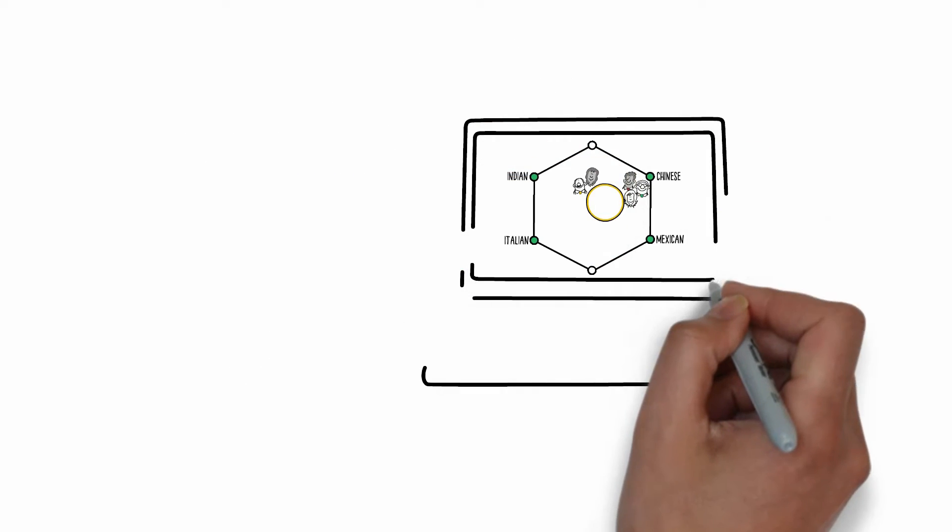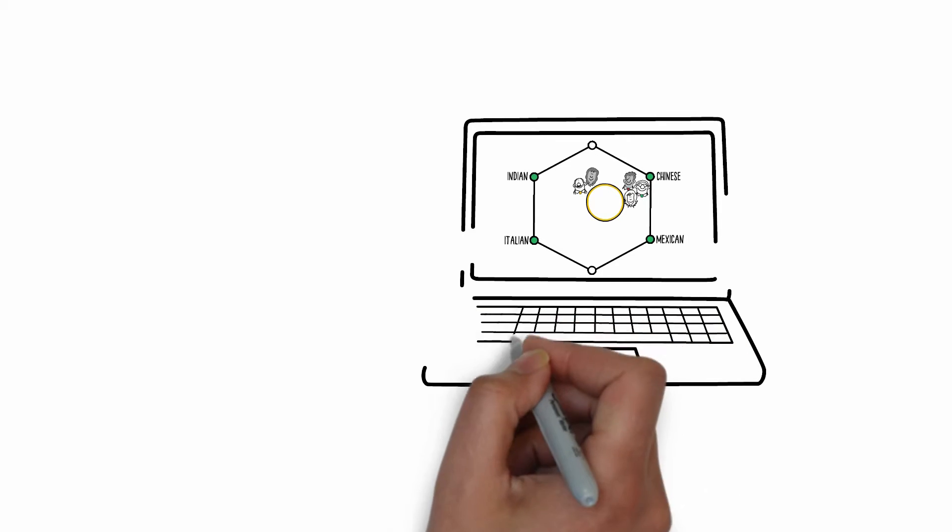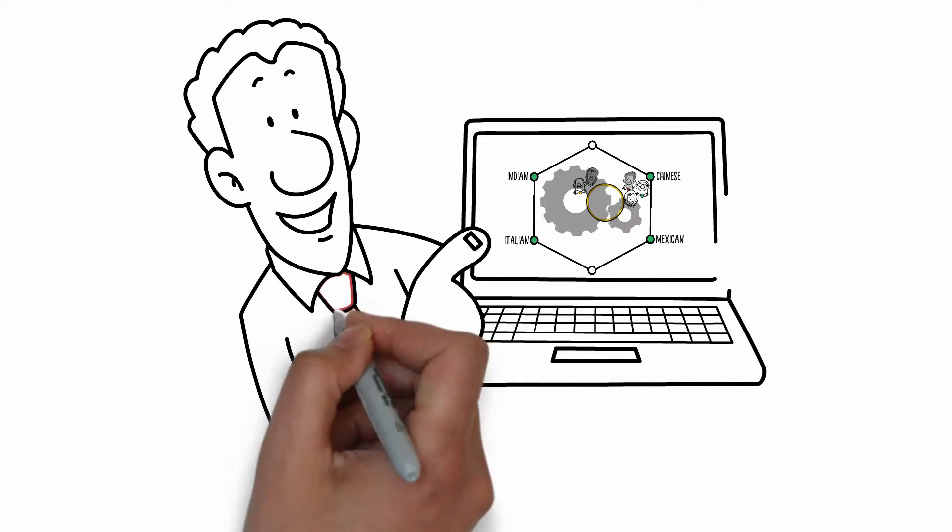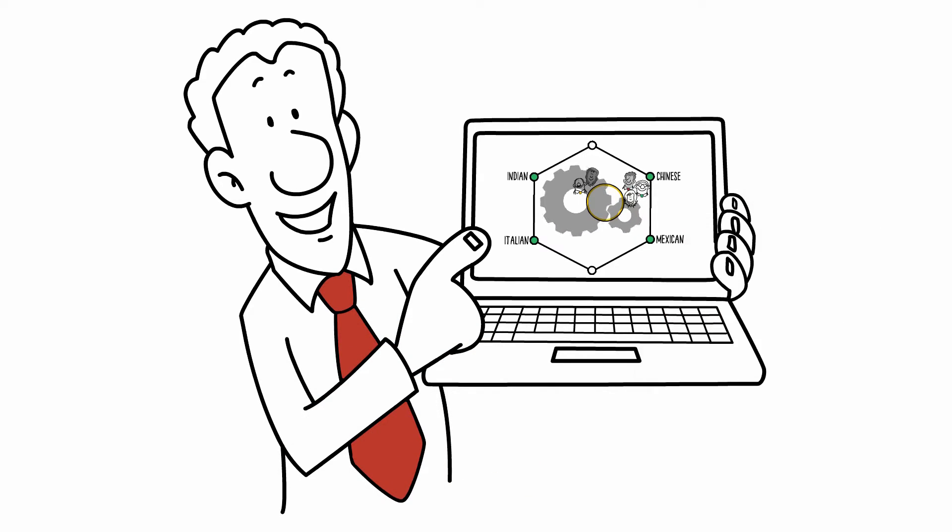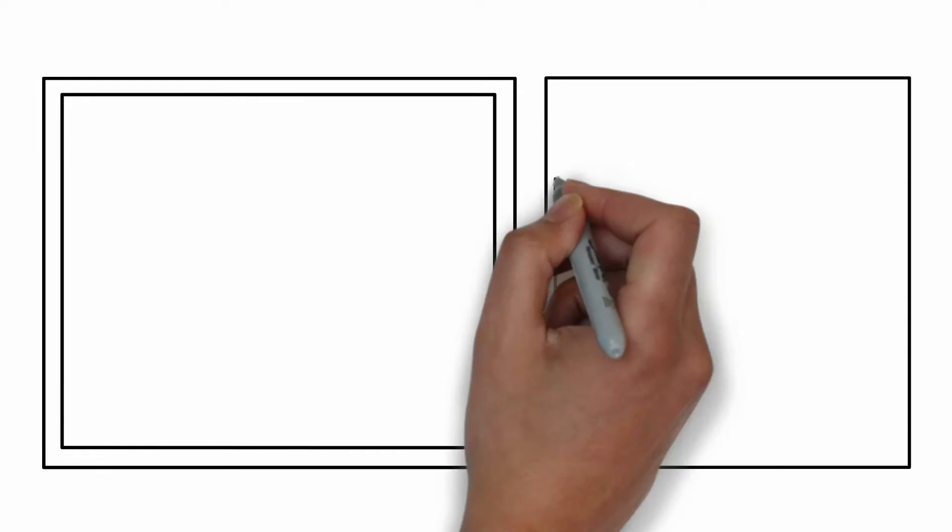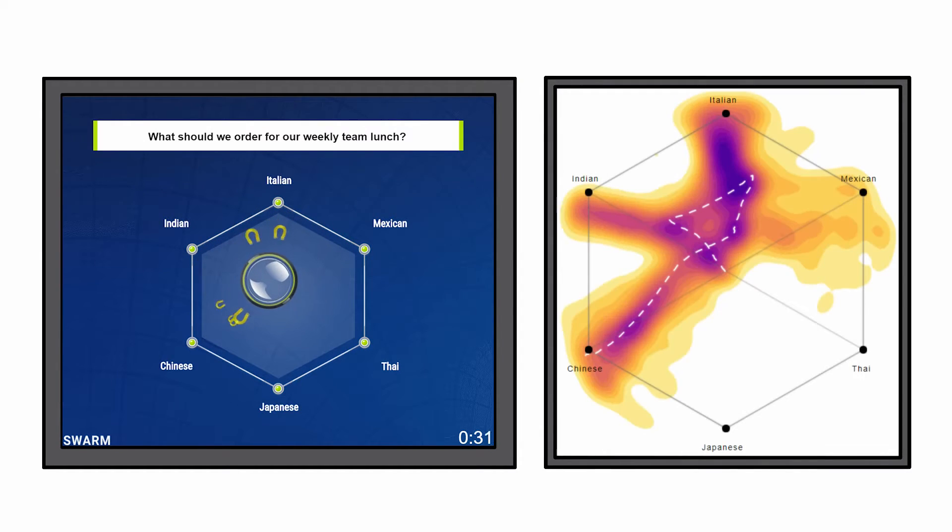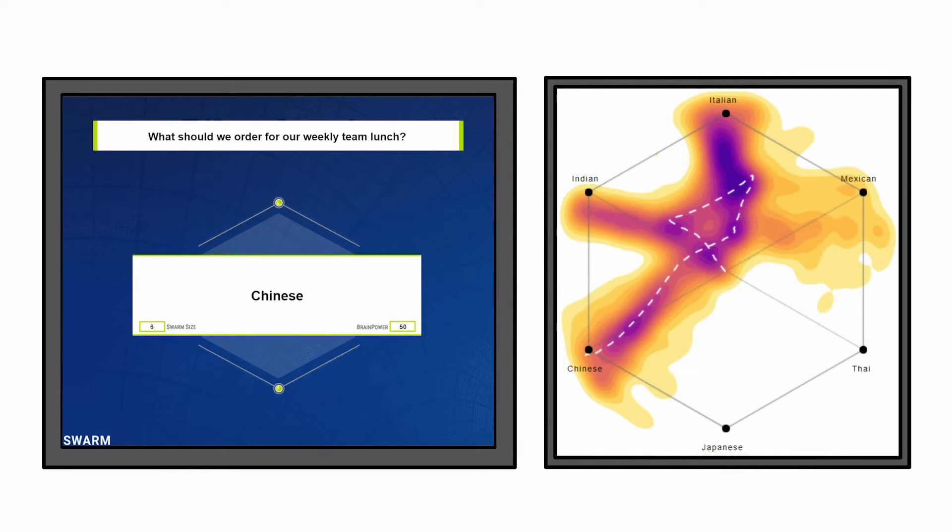As these changes happen, our Swarm Intelligence algorithms watch the real-time behaviors of every participant, assessing the strength of their conviction and determining how the Swarm should move at every instant. And guess what? As the participants wrestle with the issue, the algorithms find a better path. One that optimizes the collective satisfaction of the group.